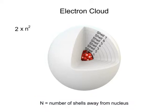To calculate the number of electrons in the first shell, you would use the equation 2 times 1 squared, which is 2 times 1, or 2 electrons.